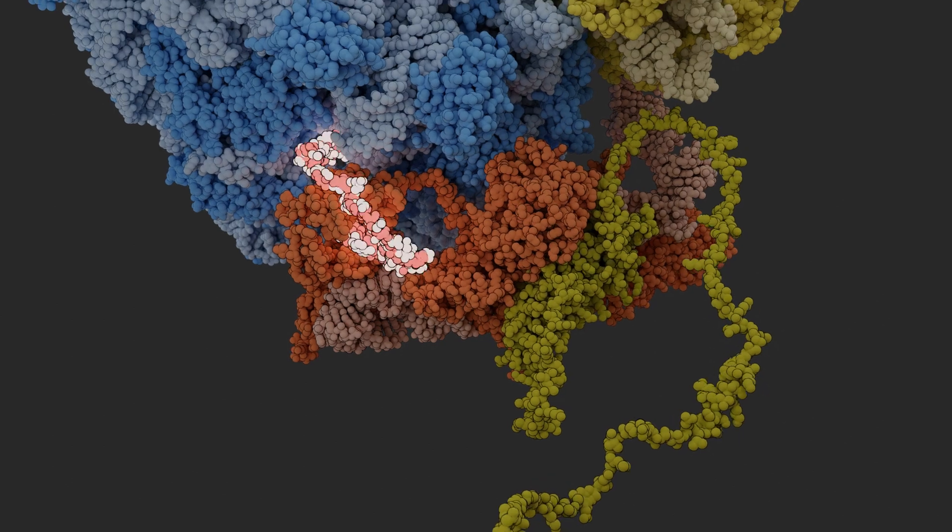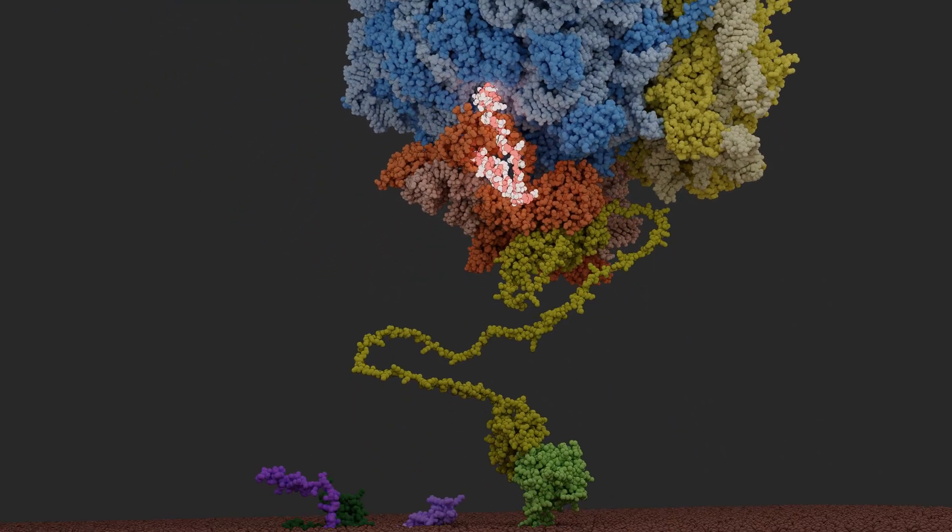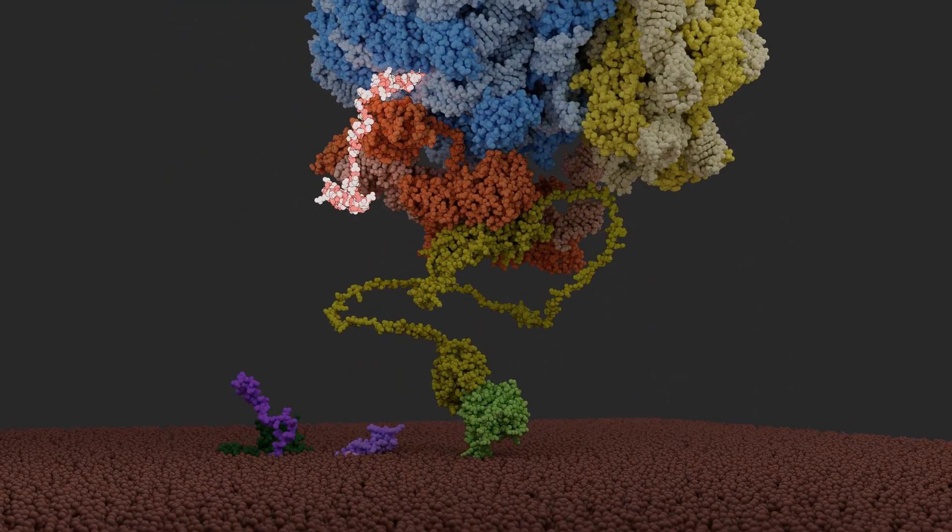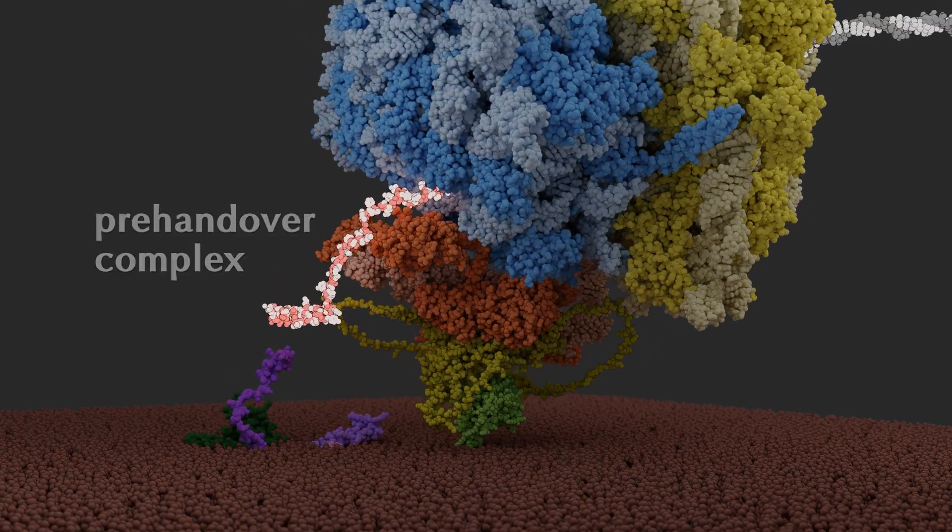Following a conformational rearrangement, the ribosome docks onto the membrane-anchored SRP receptor, forming a pre-handover complex.